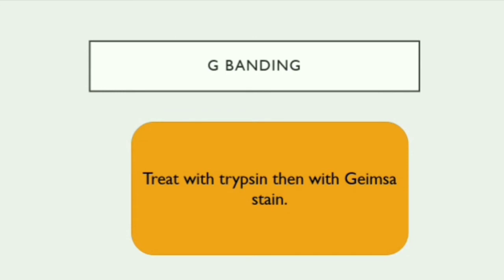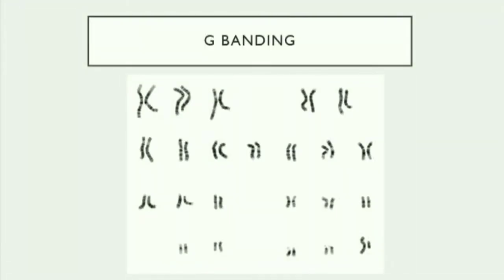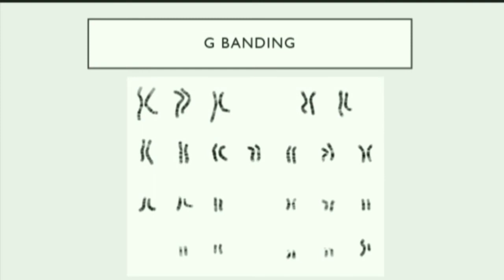G-banding is the most common and basic type of banding. It is done by first treating the chromosome with trypsin and then with Giemsa stain. The diagram shown is of G-banding. In the staining pattern of G-banding, the AT-rich regions are more darkly stained, meaning the Giemsa stain is more concentrated in AT-rich regions, whereas the GC (guanine-cytosine) regions are less stained.